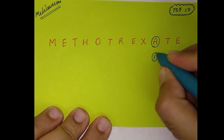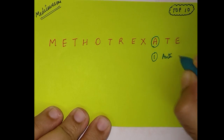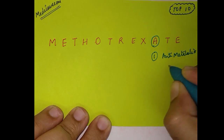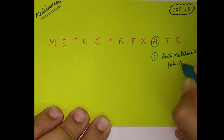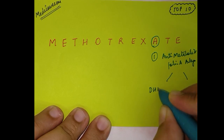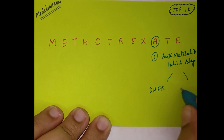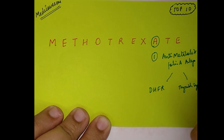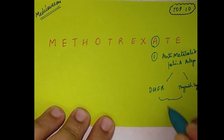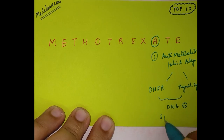Number one — the mechanism of action. It works as an antimetabolite; it's a folic acid antagonist — specifically a competitive antagonist of folic acid. It acts by inhibiting two enzymes: dihydrofolate reductase and thymidylate synthase. Because of this, it's a DNA synthesis inhibitor and it acts on the S phase of the cell cycle, making it a cell cycle-specific drug.